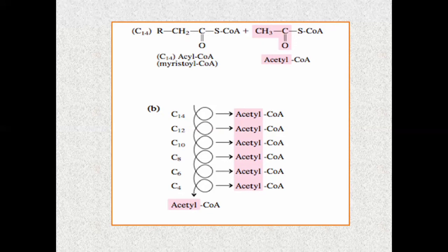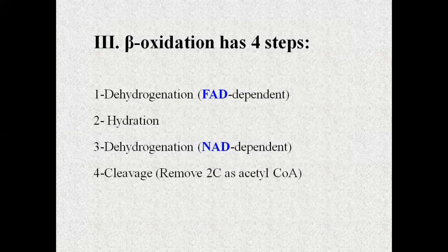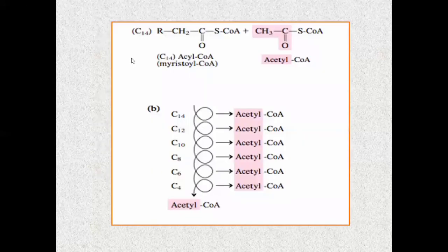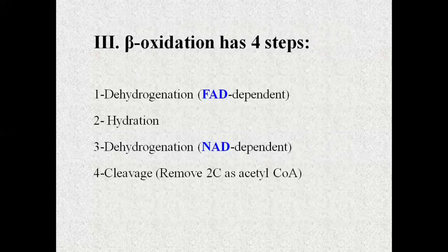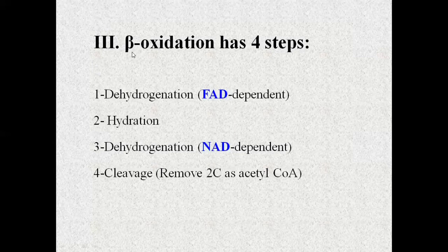In summary: first is fatty acid activation, then transport using the special carnitine transport mechanism into the mitochondrial matrix, and finally beta-oxidation. Beta-oxidation is so named because the bond that breaks is between the alpha and beta carbon. After the carboxyl carbon, the first carbon is the alpha carbon and the second is the beta carbon. So the bond break between alpha and beta carbon gives the name beta-oxidation. Two carbons — one carbonyl carbon and one alpha carbon — are released as acetyl-CoA.